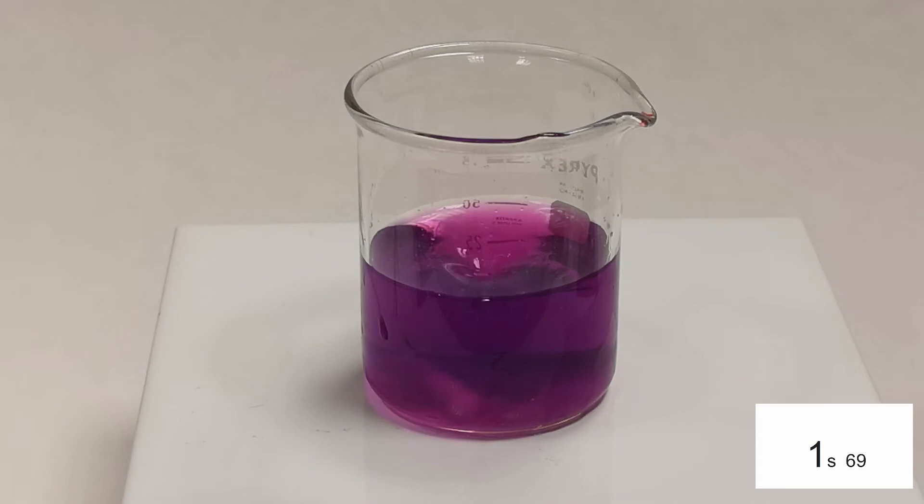Another factor affecting rates of reaction is temperature. This reaction is of potassium permanganate with ethane dioic acid, oxalic acid. The reaction can be followed simply by seeing how long it takes for the purple manganate ion colour to disappear.